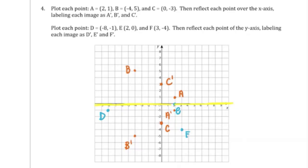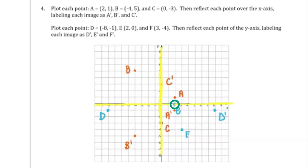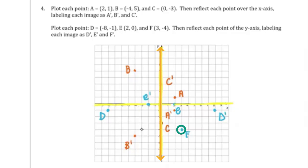Now reflecting D, E, and F over the y-axis, the vertical line. D is (−8, −1); reflected over the y-axis we are now at (8, −1) — D prime. E is (2, 0); reflected over the y-axis we are now at (−2, 0) — E prime. Point F is (3, −4); reflecting over the y-axis we're now at (−3, −4) — F prime.